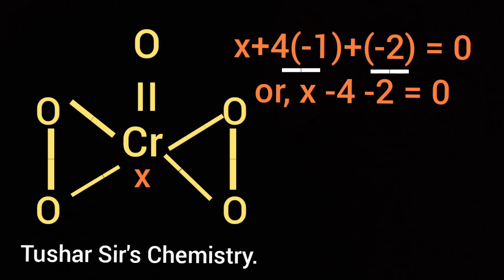x plus 4 into minus 1 plus minus 2 is equal to 0. Zero because CrO5 is a neutral compound. x is the oxidation number of chromium to be calculated.